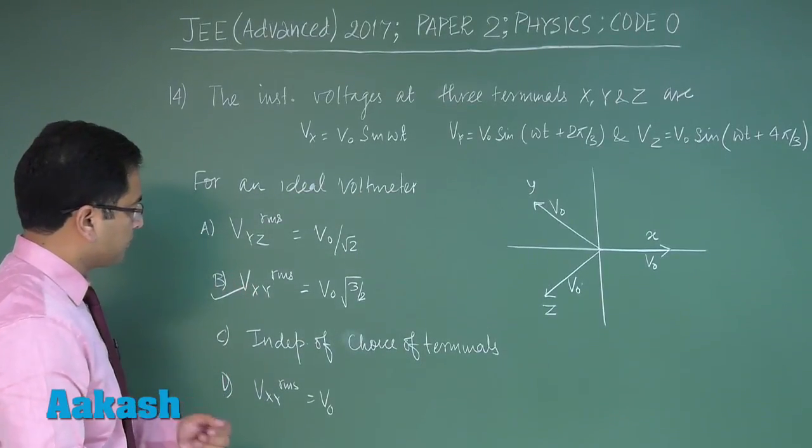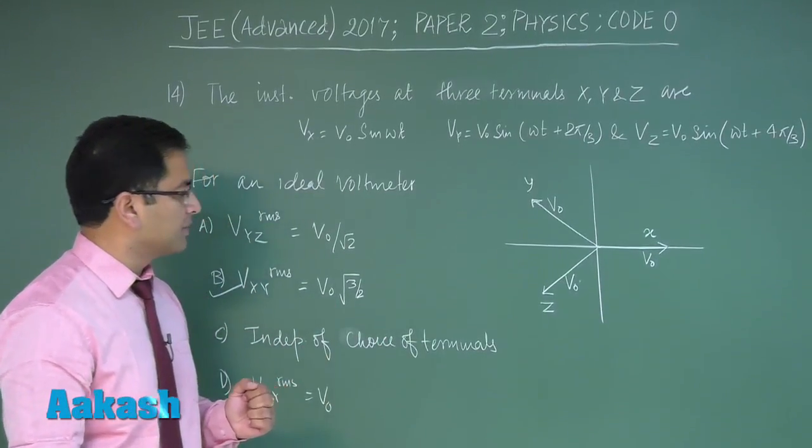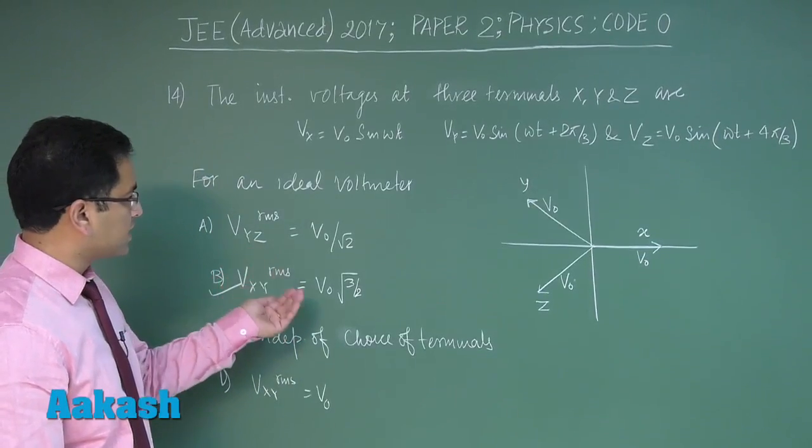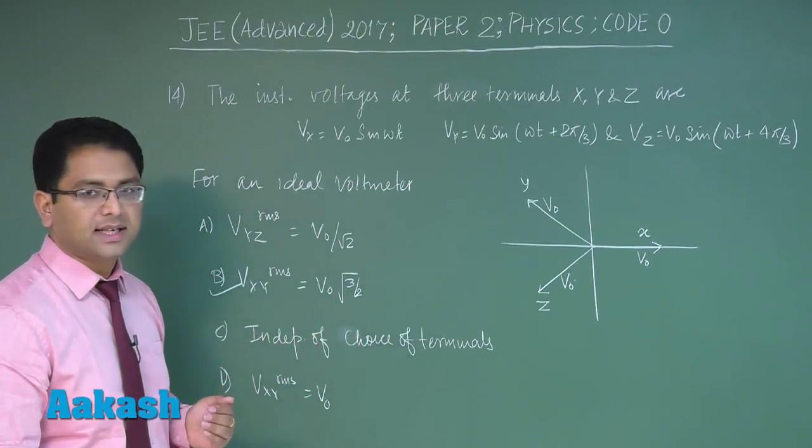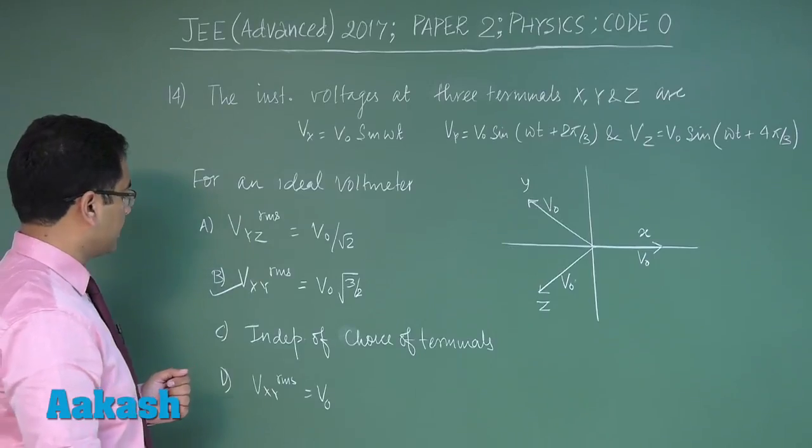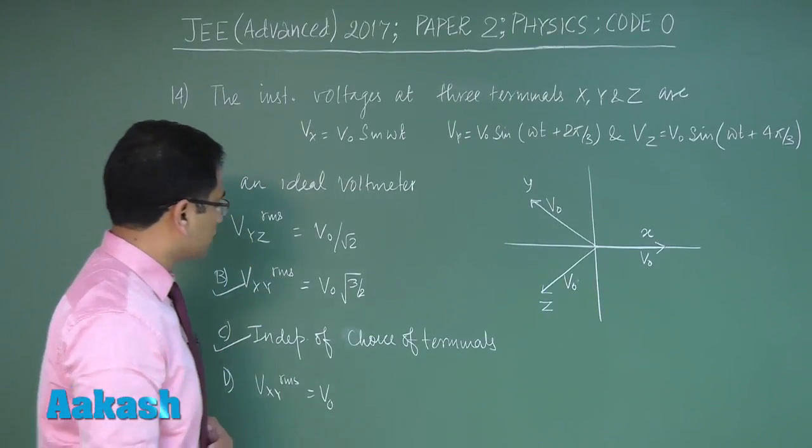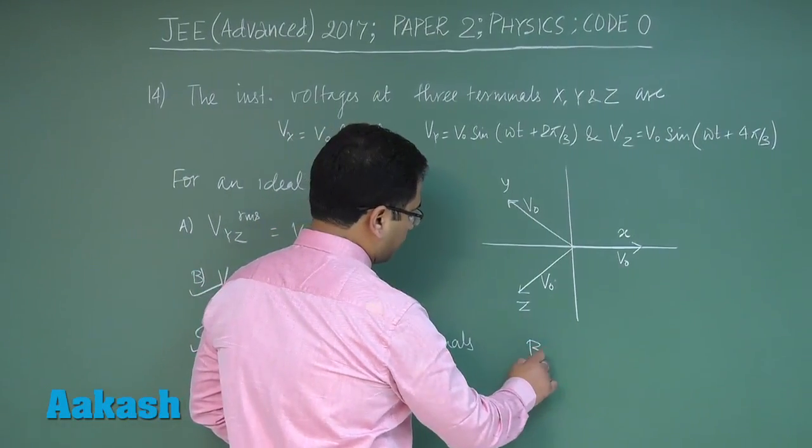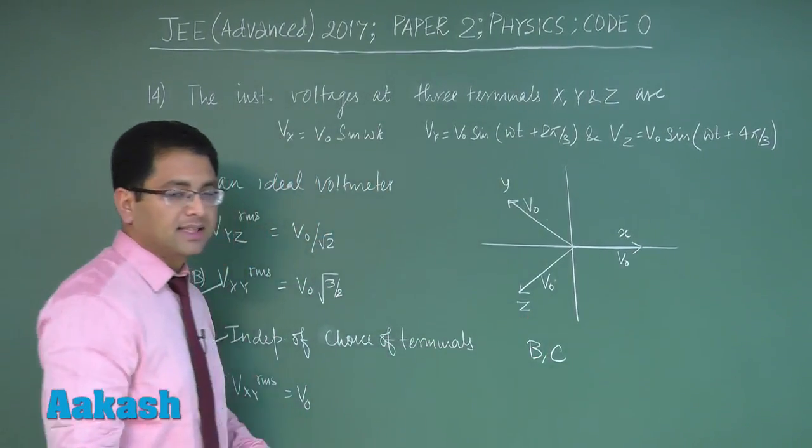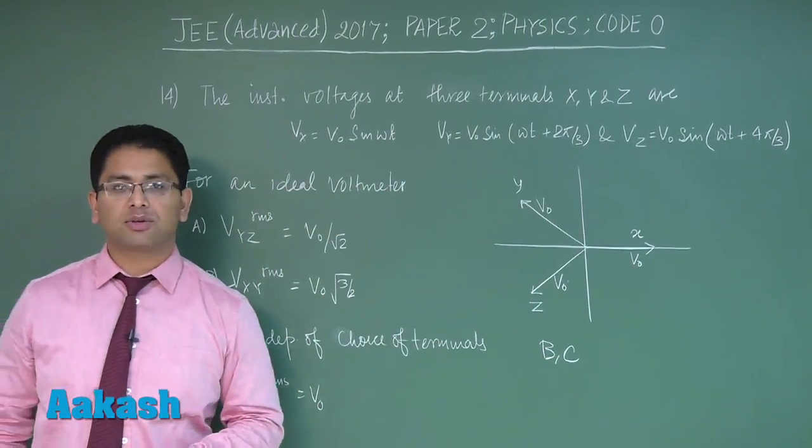This would come as the correct option. Independent of choice of terminals means either you do XY or you do YZ, the value comes out to be the same. So that would be independent of choice of terminals. For question number 14, correct options are B and C. Now let's move on to question number 15.